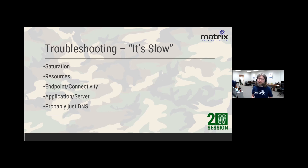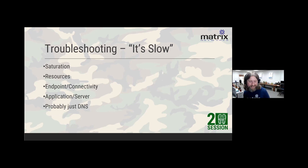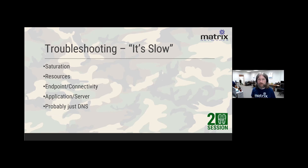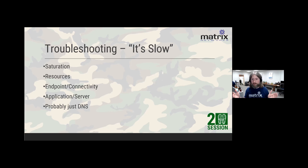The dreaded complaint — 'it's slow' — is the most common one in my career without telling you what application, what endpoint, or what day. How do we walk through that? The easiest thing that might jump out is saturation: if an uplink or a port to an endpoint is saturated — you can only fill a gigabit — after that nothing gets through. Resources along the path are also a factor, especially if traffic is going through a firewall or over IPsec.